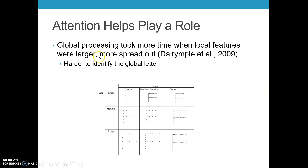We also know that attention plays a role. In a study by Dalrymple and colleagues in 2009 using Navin figures, letters were either tightly packed together or spaced out more, and the size of the letters being made was also modified. Dalrymple found that global processing takes more time when the local features are larger and more spread out. So it really depends on the relationship between the local and the global features to figure out which we're going to identify first.